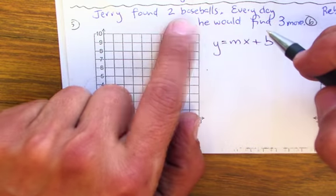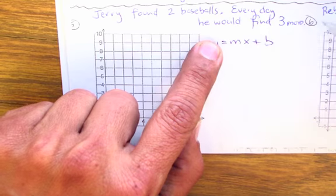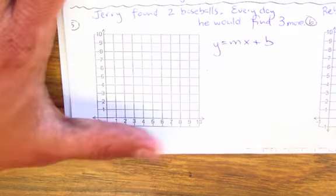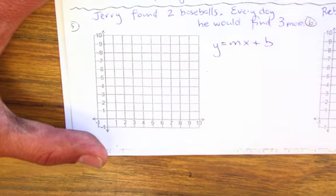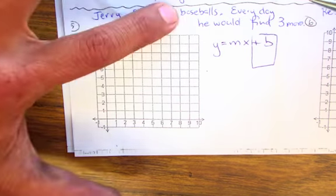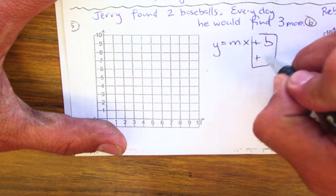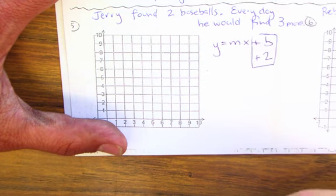So the word problem is Jerry found two baseballs. Every day he would find three more. So what we need to do is we've got to find the starting point and that's your b. What did he start with? He found two baseballs. Alright, so he has two baseballs. So that's positive two, okay?